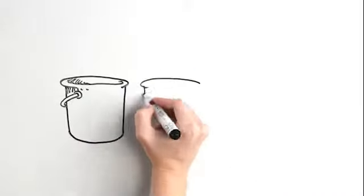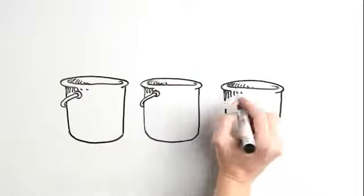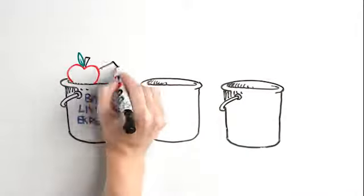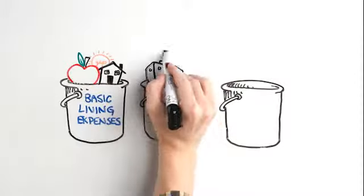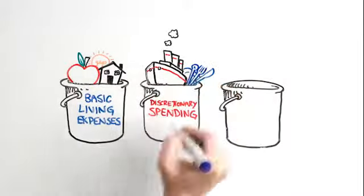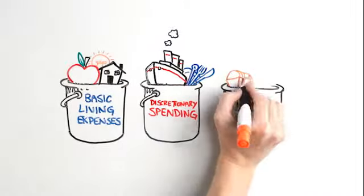One approach is to segment your expenses into three buckets. Basic living expenses: food, rent, utilities, etc. Discretionary spending: vacations, dining out, etc. Legacy assets for heirs and charities.